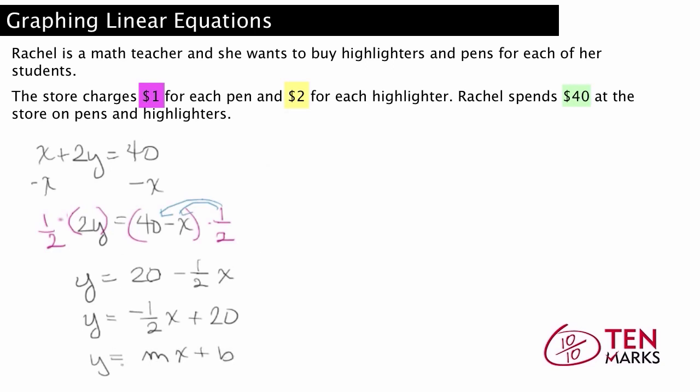The slope is negative 1 half, and the Y-intercept is 20. The Y-intercept is where the line intersects the Y-axis. And now we're ready to graph.